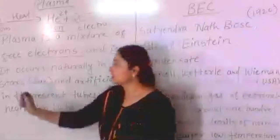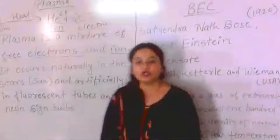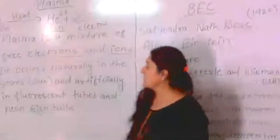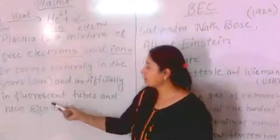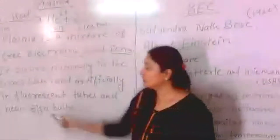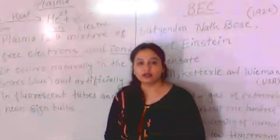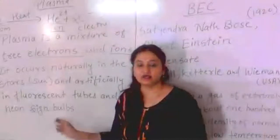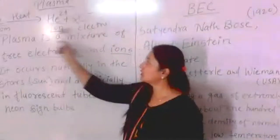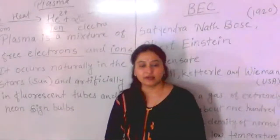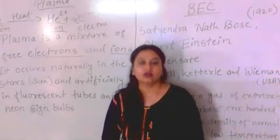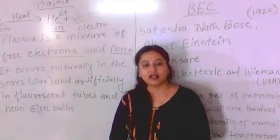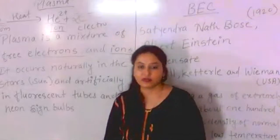Stars also give light, and the sun also gives light and heat. Because of the extreme heat, the gases of the sun continuously break into ions and electrons, forming plasma. That is why the sun glows. So plasma is the fourth state of matter, a mixture of electrons and ions. Naturally it is found in the sun and other stars, and artificially it is found in fluorescent tubes, neon lights, bulbs, etc.